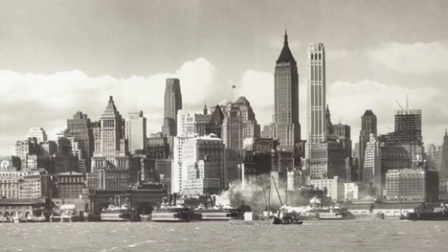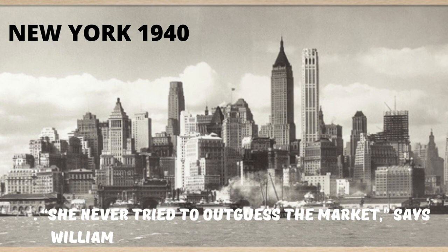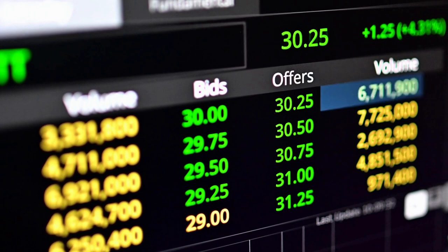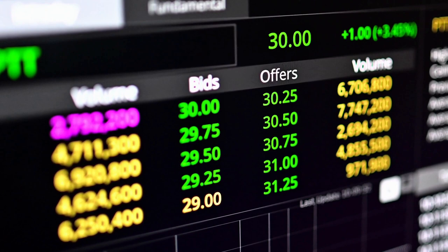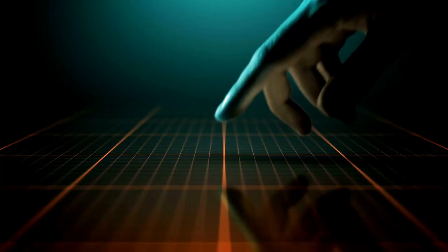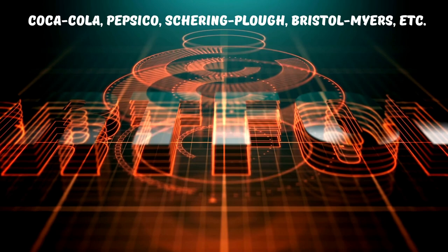She returned to New York City and dedicated her life to playing the stock market. She never tried to outguess the market, says William Fay, Scheiber's broker since the 70s. Her strategy? Invest in blue chip companies and hold on. Her portfolio included stakes in over 100 companies, most of them well-known names such as Coca-Cola, PepsiCo, Sharing Plow, Bristol-Myers.